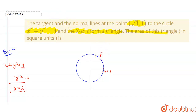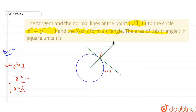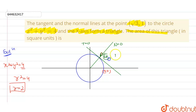There is a tangent passing through point P, and also a normal at point P. The normal line is perpendicular to the tangent line. Let's label the origin as O and the x-intercept of the tangent as point A. The tangent and normal are perpendicular to each other at point P, which has coordinates (√3, 1).